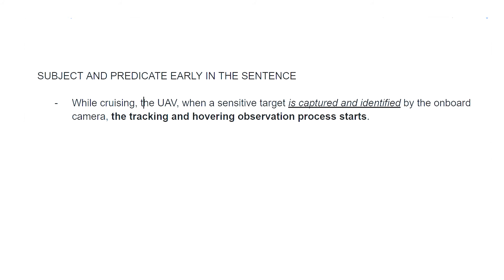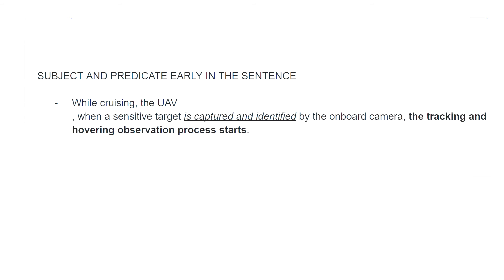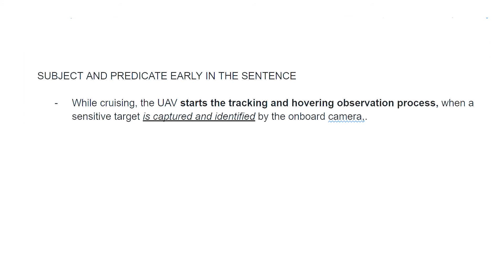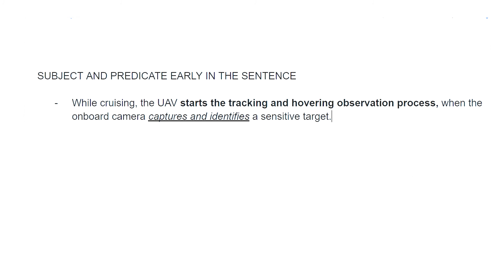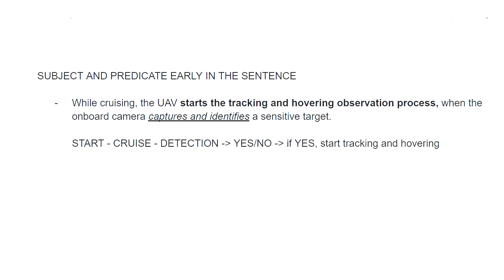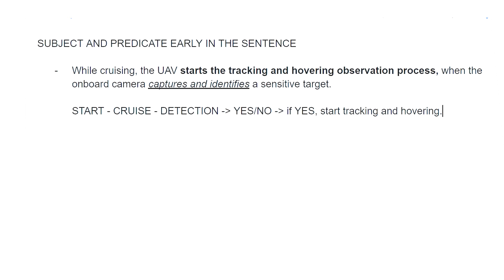The UAV — an unmanned aerial vehicle — starts the tracking and hovering observation process when, and now we have a second subject, the onboard camera captures and identifies a sensitive target. Now we know very early where this is going. The final sentence: 'While cruising, the UAV starts the tracking and hovering observation process when the onboard camera captures and identifies a sensitive target.'